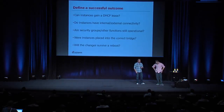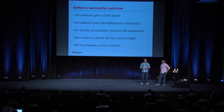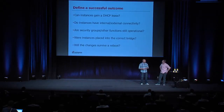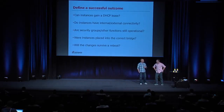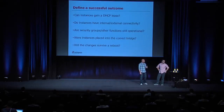Part of our standard maintenance plan is to define what constitutes a successful outcome. Some of the tests we would want to execute: verifying that instances were able to gain a DHCP lease after the migration, that instances were still accessible through floating IP functionality or directly, that instances still had outbound connectivity, that security groups were still functional, and that instances themselves were placed into the correct bridge. Linux Bridge and Open vSwitch use two different bridge names, so if it's not placed on the right bridge, it's just not going to work. Finally, will the changes survive a reboot?